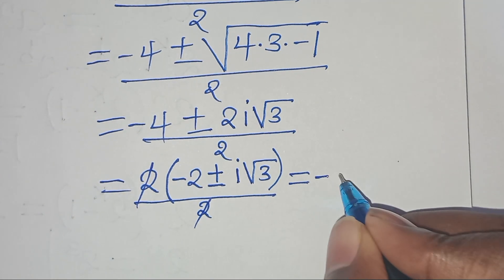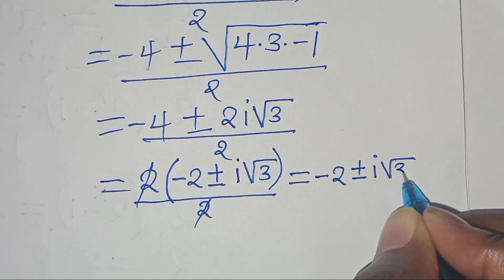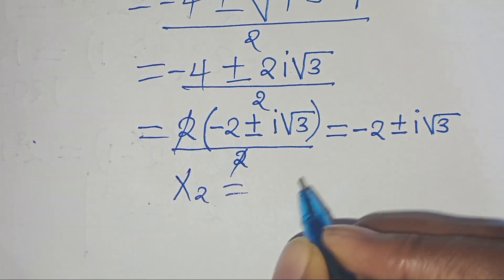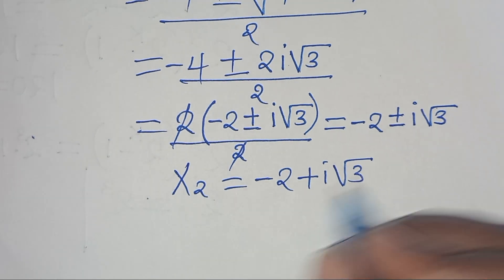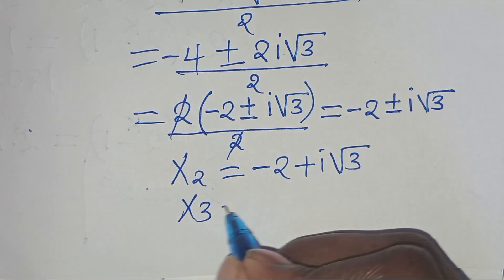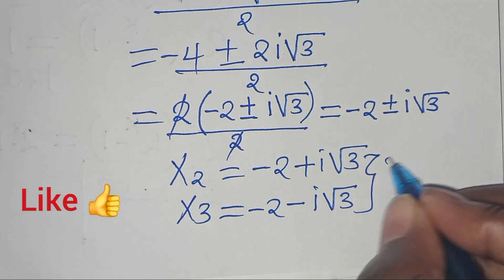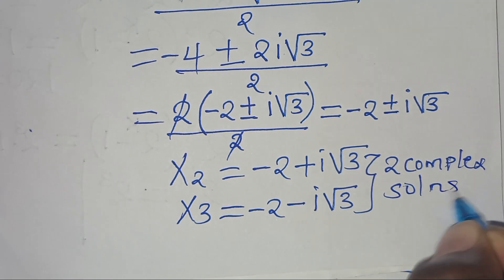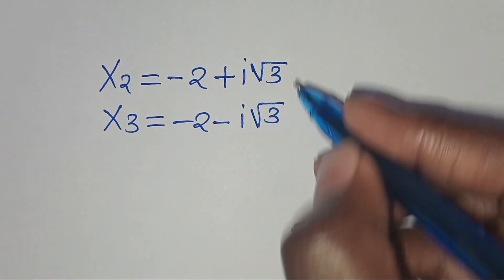Simplifying the numerator gives us minus 2 plus or minus i square root of 3. This implies that x2 is equal to minus 2 plus i square root of 3, and x3 is equal to minus 2 minus i square root of 3. So these are two complex solutions under case 1.